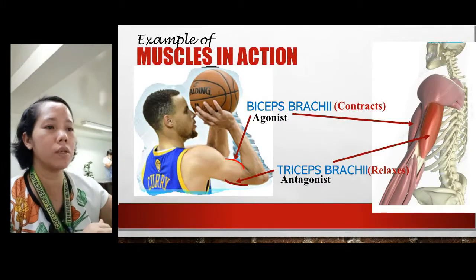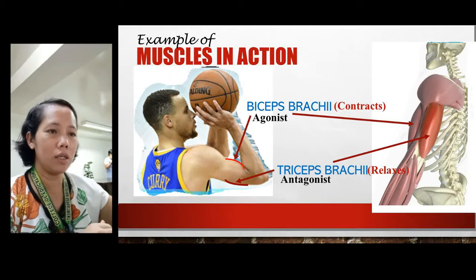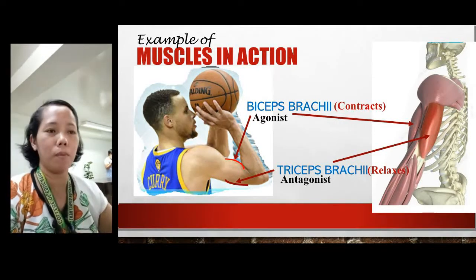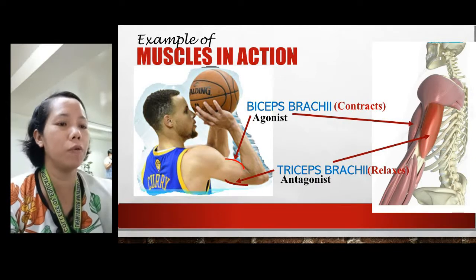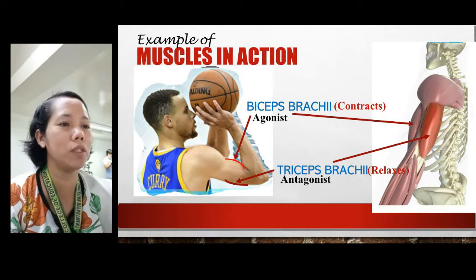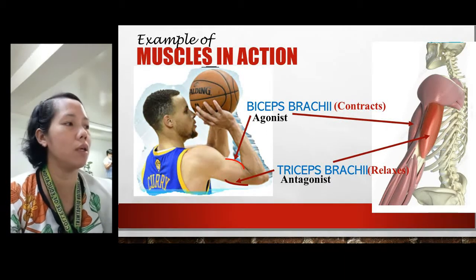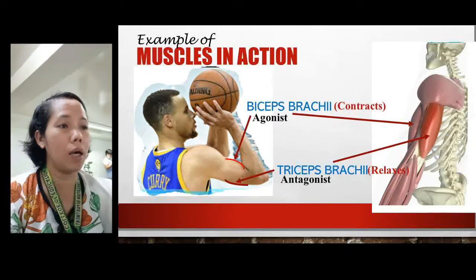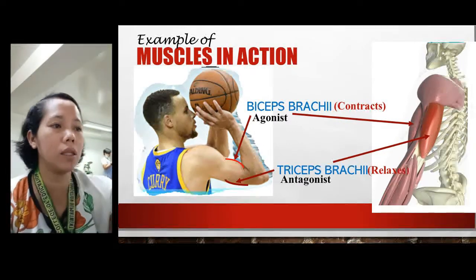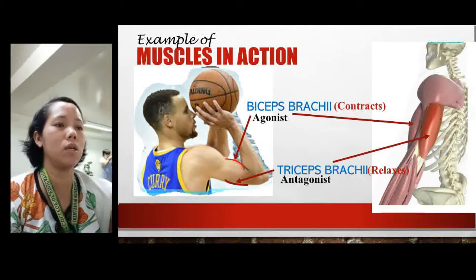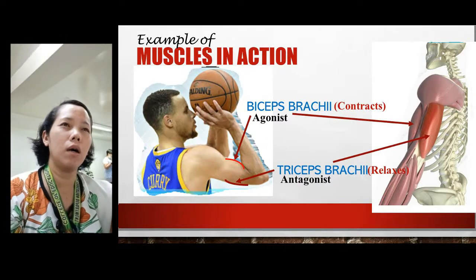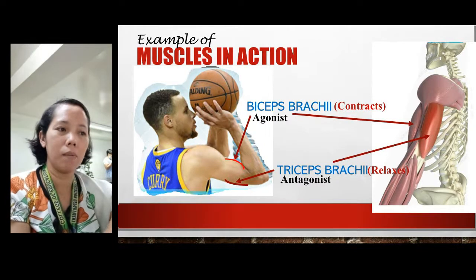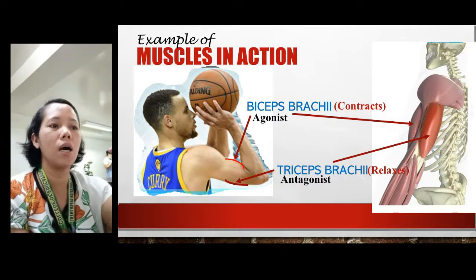Now, an example of muscles in action — and you have the handout — is the action of attempting to shoot a ball. I have prepared here, especially for the basketball players, this guy is quite famous. Look at his action — he's actually trying to shoot the ball. With that action, you have the biceps brachii and the triceps brachii. When the biceps contracts, its opposing muscle — the triceps — will relax as a result.